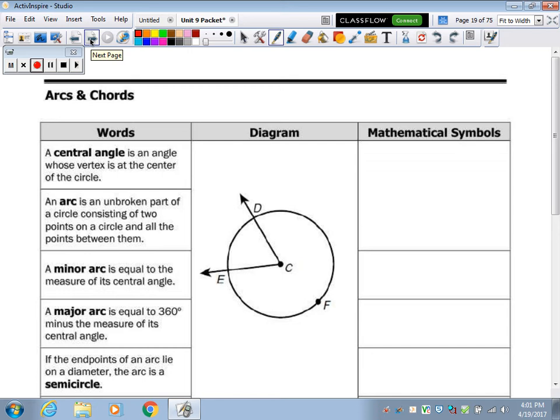So first vocab word, a central angle, is an angle whose vertex is at the center. This angle that's shown right here, because it's at the center of the circle, that's called the central angle.